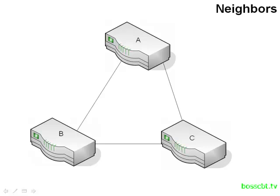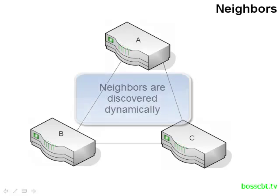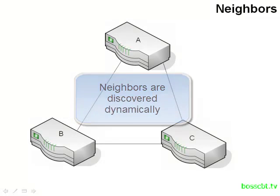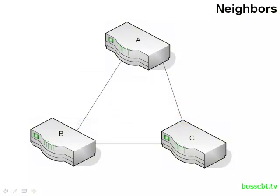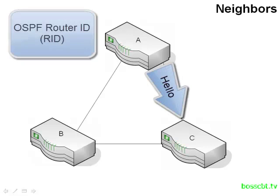An OSPF router doesn't necessarily know who or where its neighbors are. Neighbors are discovered dynamically using the hello packet by sending it to the multicast address. Inside this hello packet is a lot of information. You have something called the router ID — a 32-bit value that is the OSPF ID of a router, identifying each router in the OSPF world.